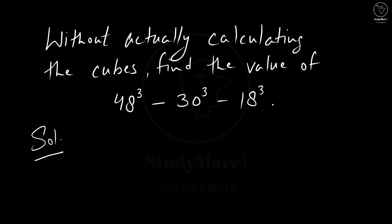So the trigger point - how are we going to solve it? How can we do it without calculating the cubes? Look at the question. We have 48³, then we have 30³ and then we have 18³. So you see we have three terms here and we have the cubes. Do you remember any identity where you have something like this? Yes, I remember.